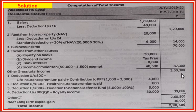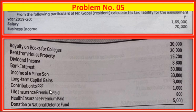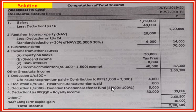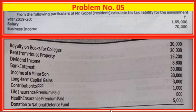Less deductions under section 80C to 80U. Under section 80C: life insurance premium paid plus contribution to PPF (public provident fund) - 1,000 plus 3,000 equals 4,000. Maximum limit is 1,50,000, so full amount 4,000 eligible. Under section 80D: health insurance premium paid - 800 or 25,000, whichever is less, so 800. Under section 80G: donation to national defense fund - 100 percent deduction, no limit - 5,000 into 100 percent equals 5,000.